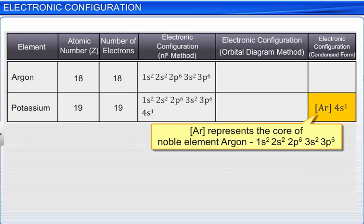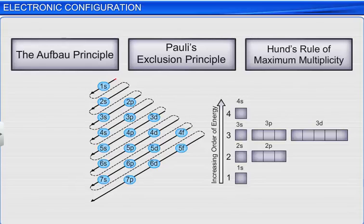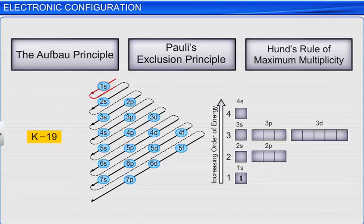The electronic configurations of atoms generally follow the three rules for filling electrons into various orbitals. For example, in potassium, the electrons enter into various orbitals as 1s2, 2s2, 2p6, 3s2, 3p6, and 4s1, in accordance with the Aufbau rule.